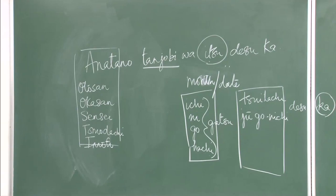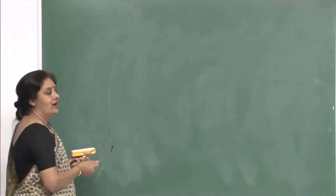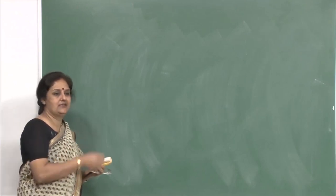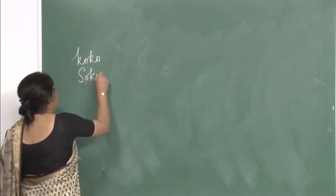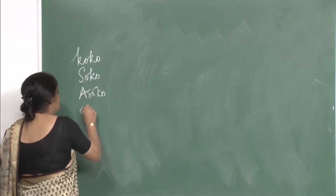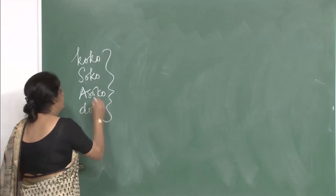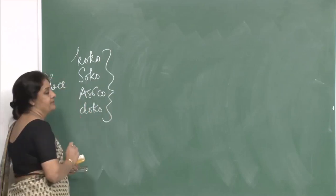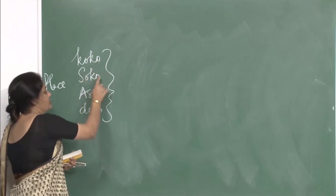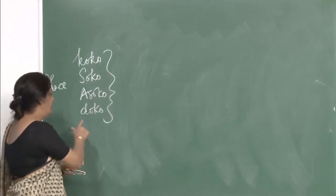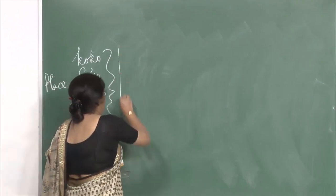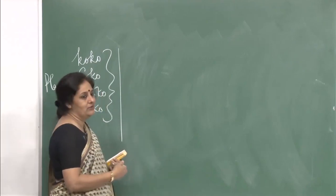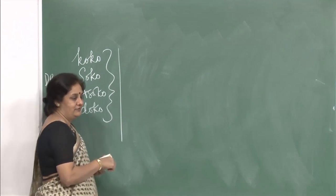You can practice all the vocabulary we have done and do your conversation. In our previous lesson we did koko, soko, asoko and doko for place. Koko means here, soko means there, asoko means over there, and doko is the interrogative word meaning where. Today we will do exactly this but in a different manner.